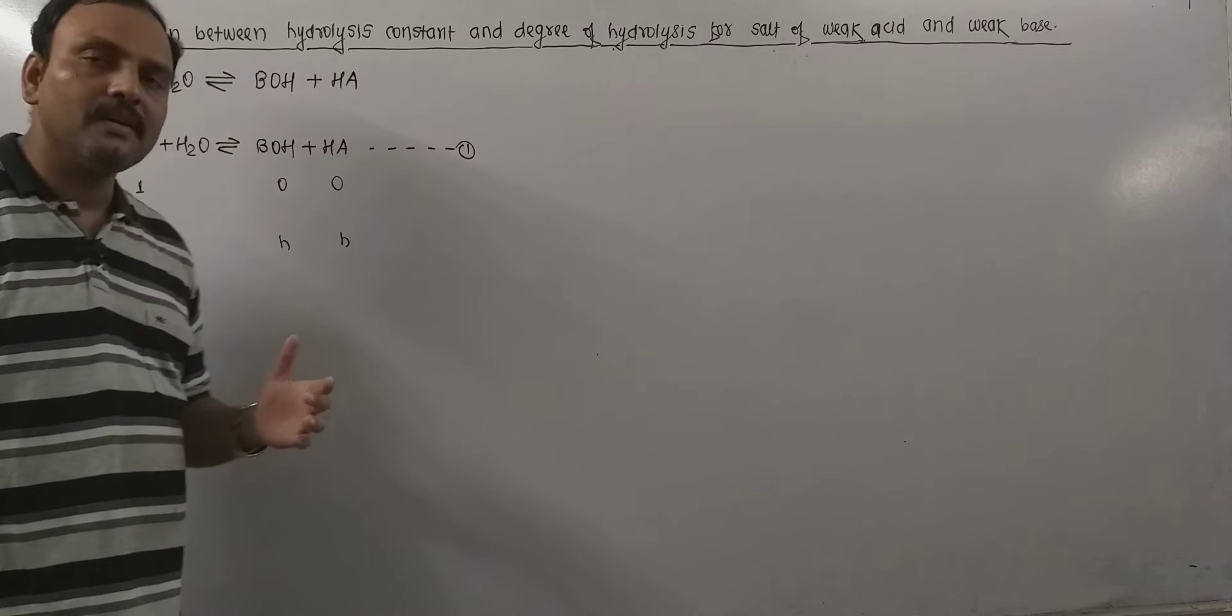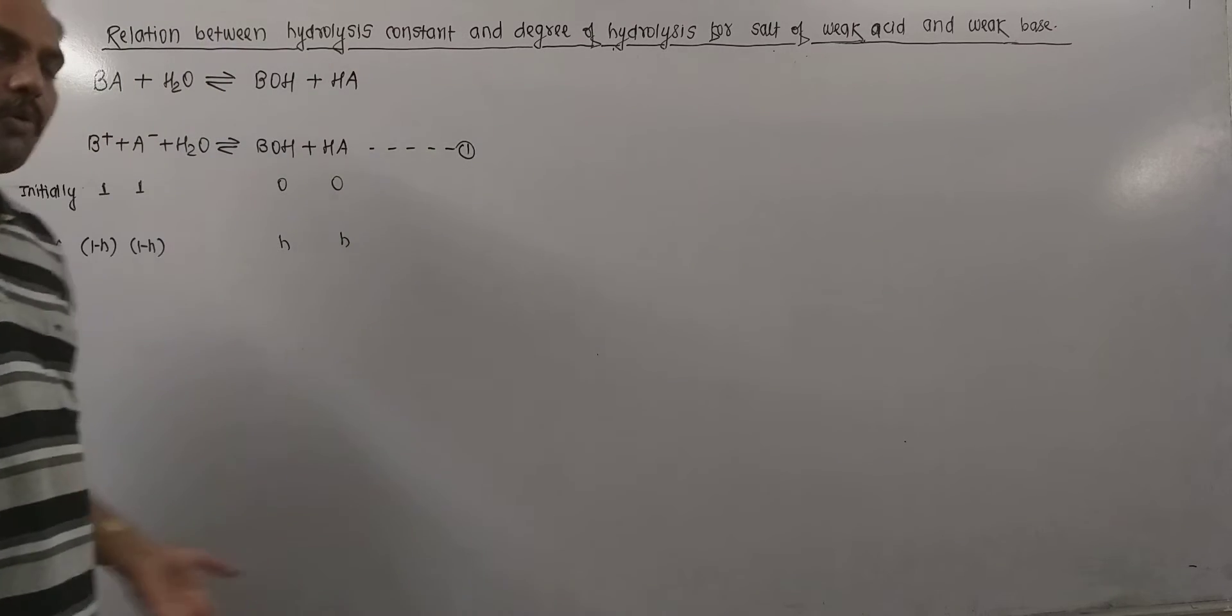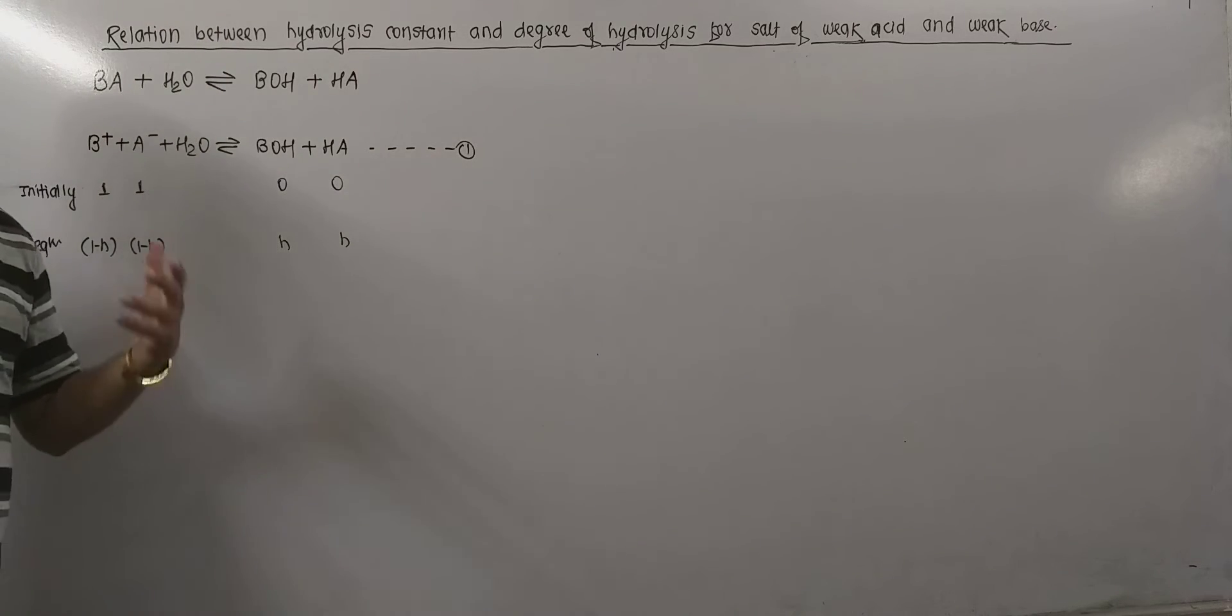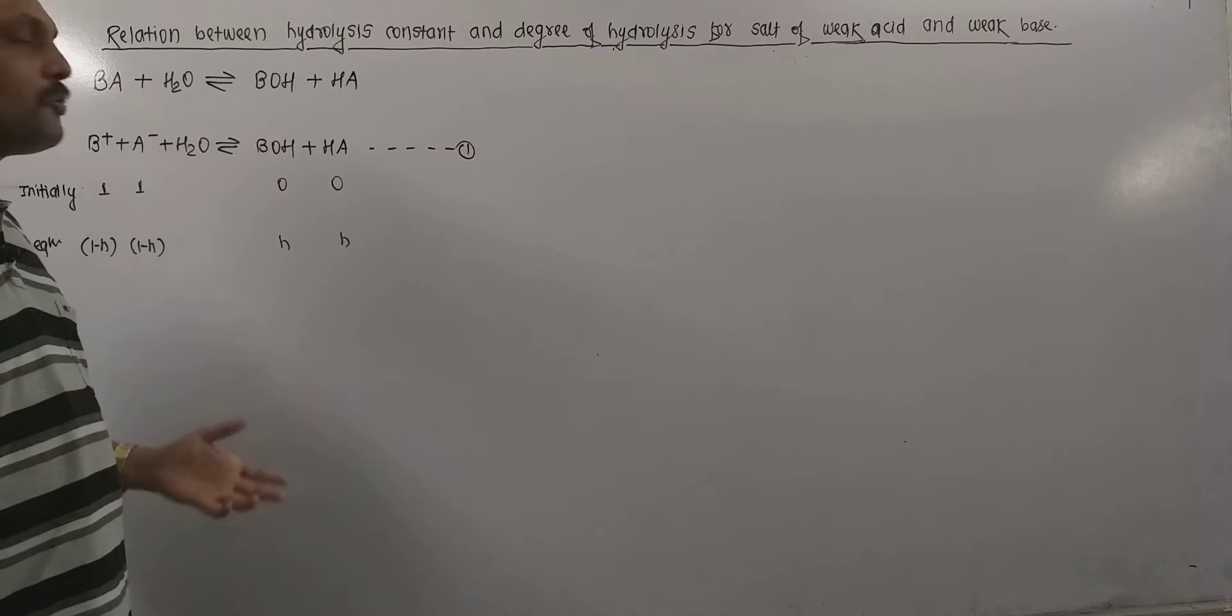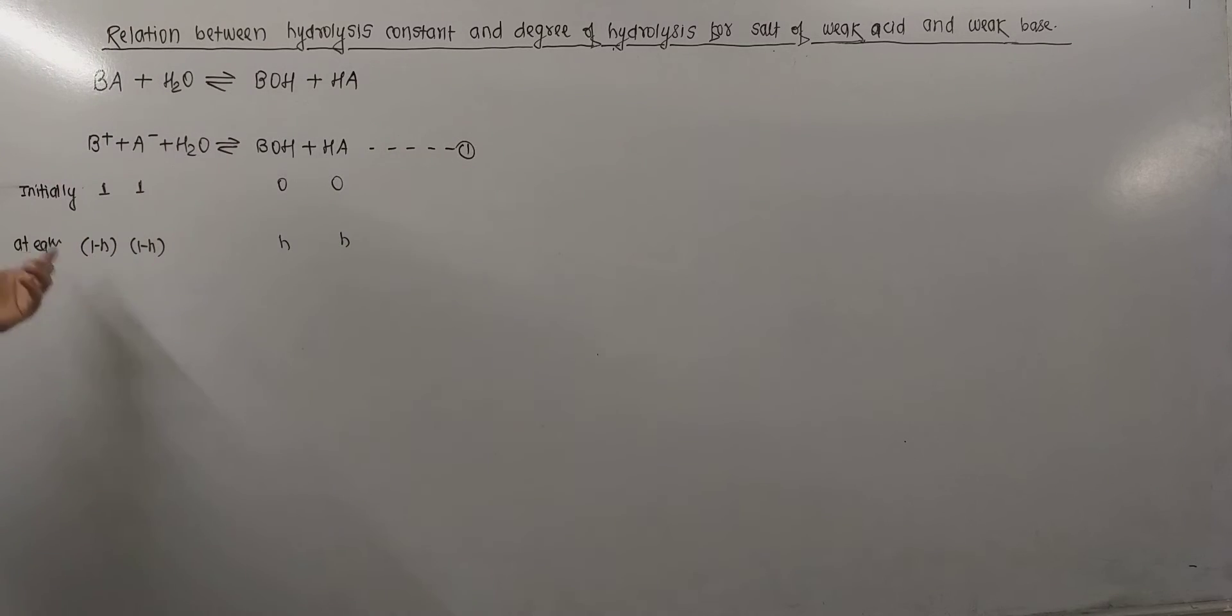Now let, out of 1 mole of B+ and A-, H moles get hydrolyzed. So if H moles get hydrolyzed, then BOH and HA produced will be equal to H.